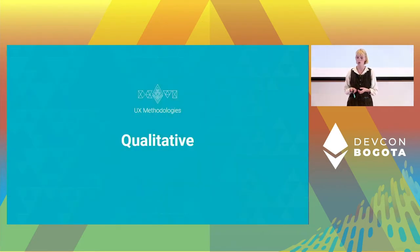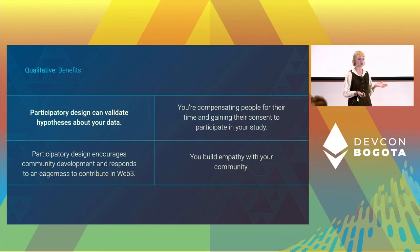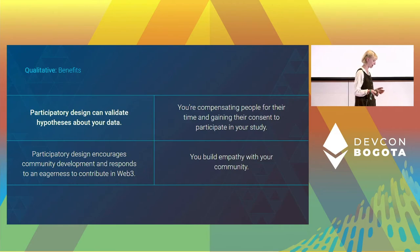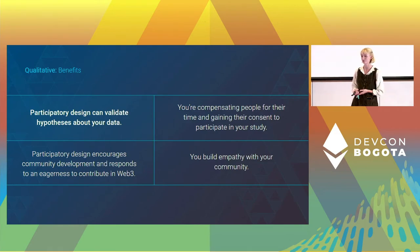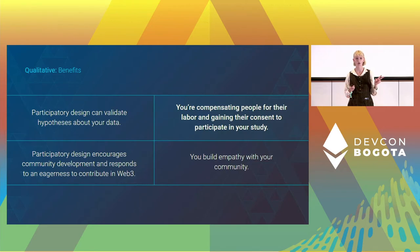Moving over to qualitative research — some benefits are that it can validate those hypotheses you made about your data. You can get to the bottom of 'why' by asking people, watching them interact with your product, and asking them to think out loud. It is super effective. You're also compensating people for their time and gaining their consent to participate, so your research becomes more ethical and legitimate.